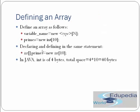Now, defining an array. To actually create an array it can be done as follows: variable name equals new, then the type, and inside the bracket we give the size. For example: variable name = new int and size is 10. Declaring and defining in the same statement can be done by: data type, bracket, variable name = new int, size 10.